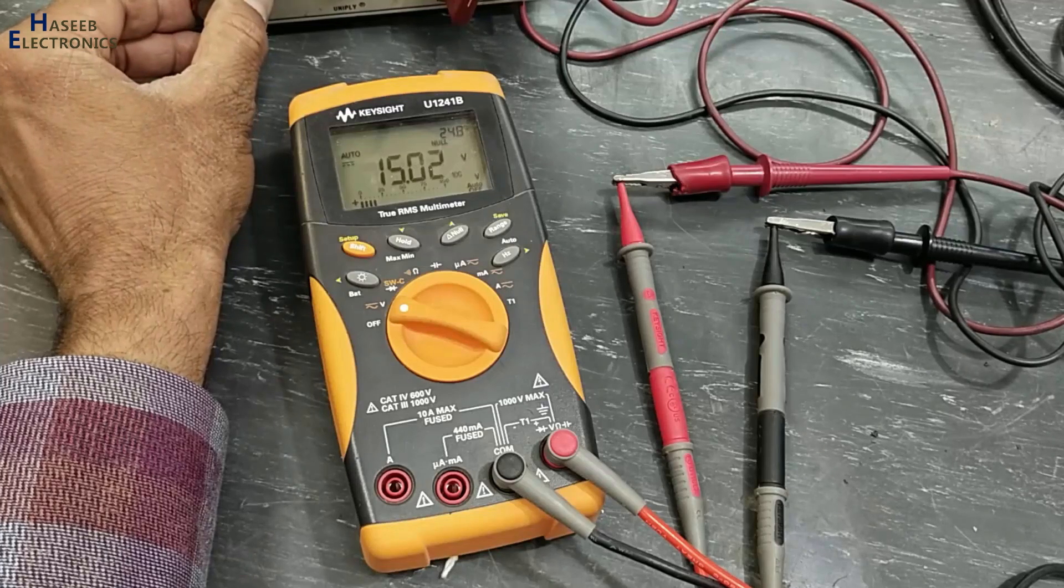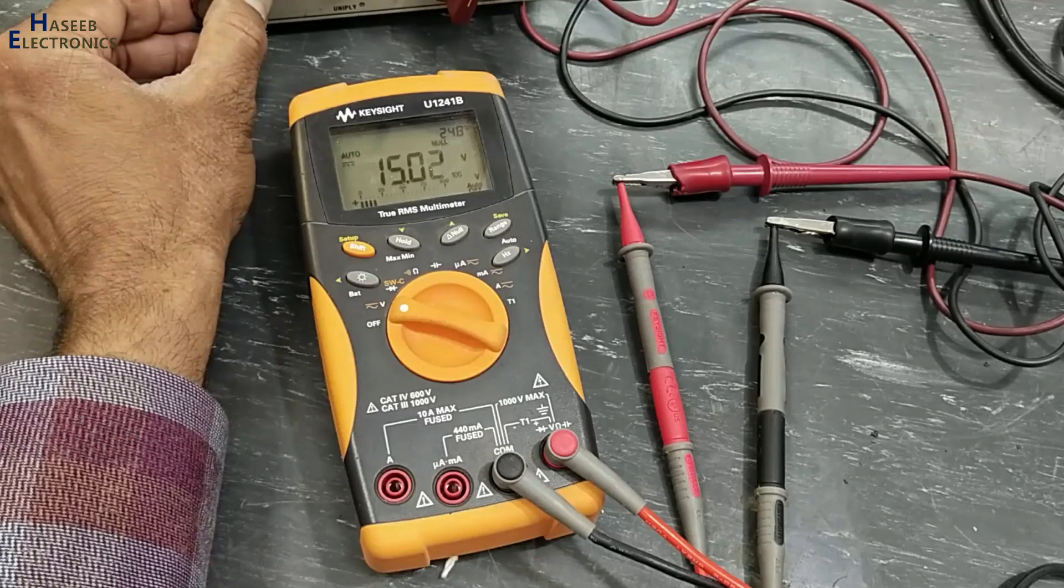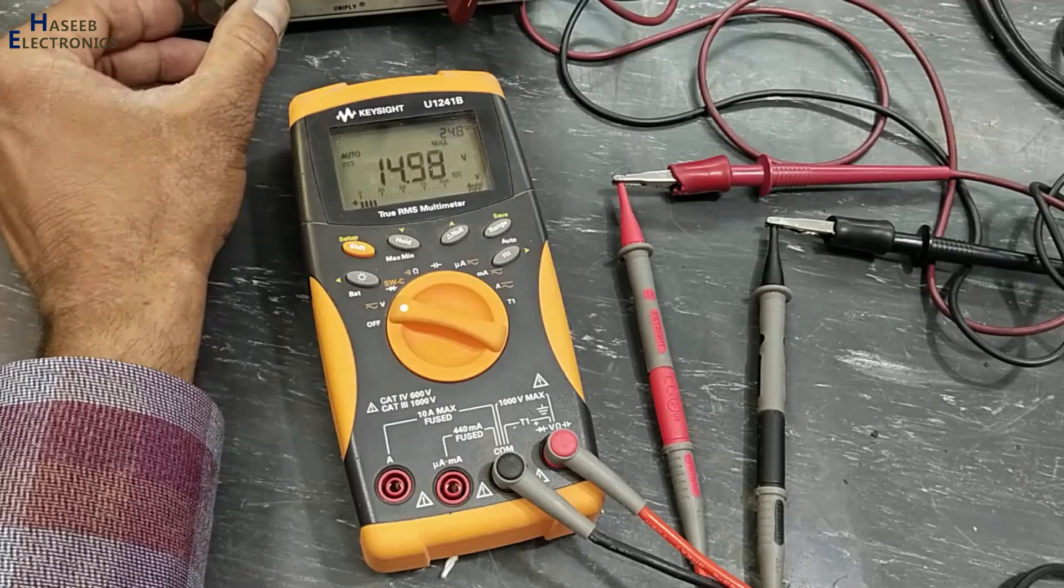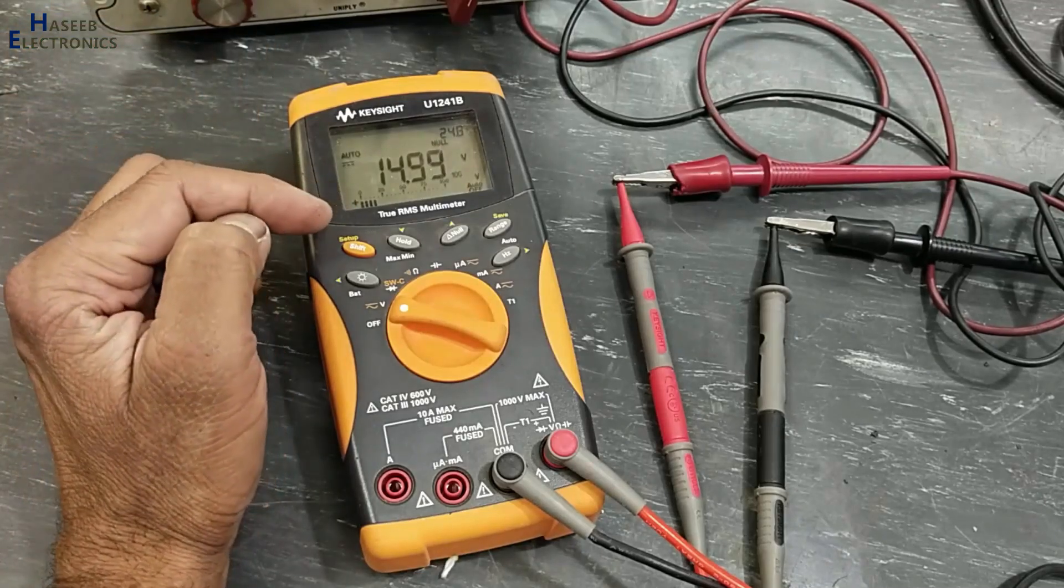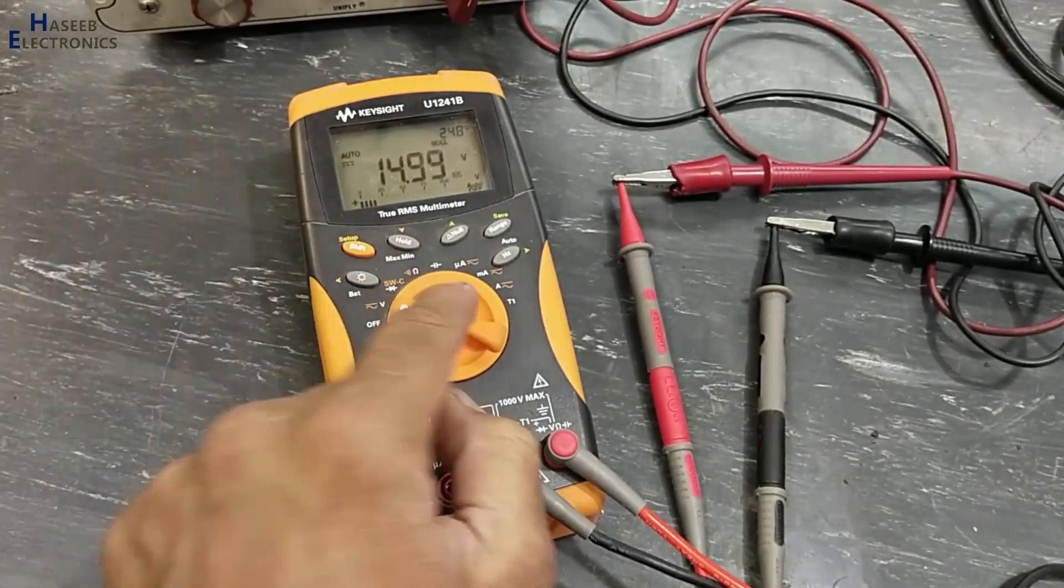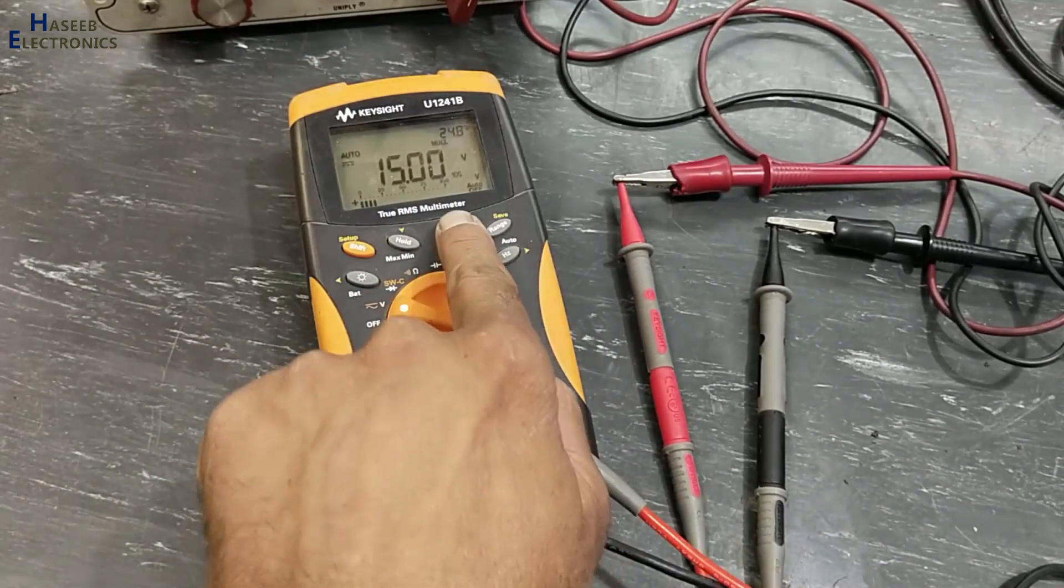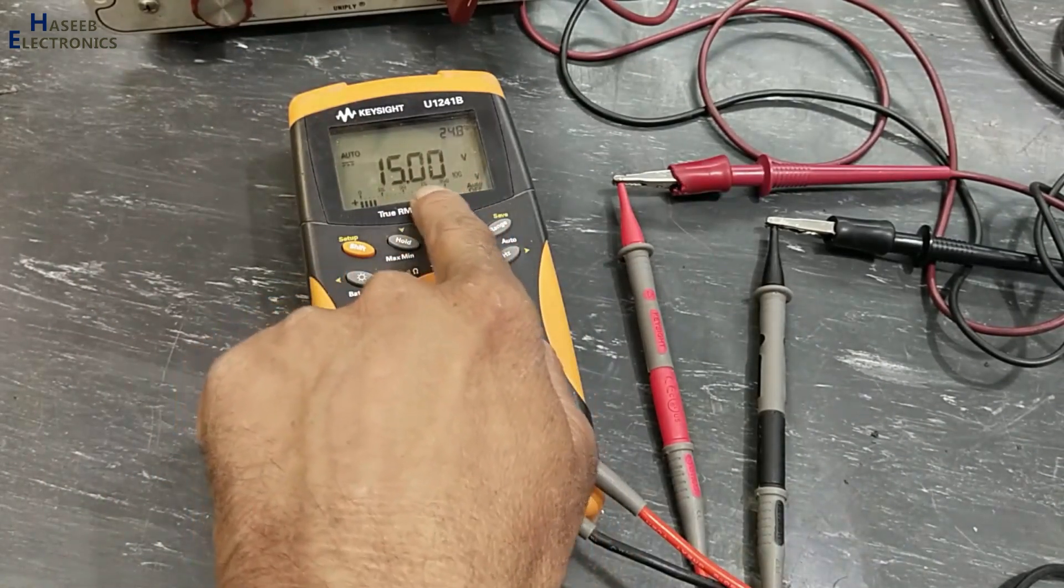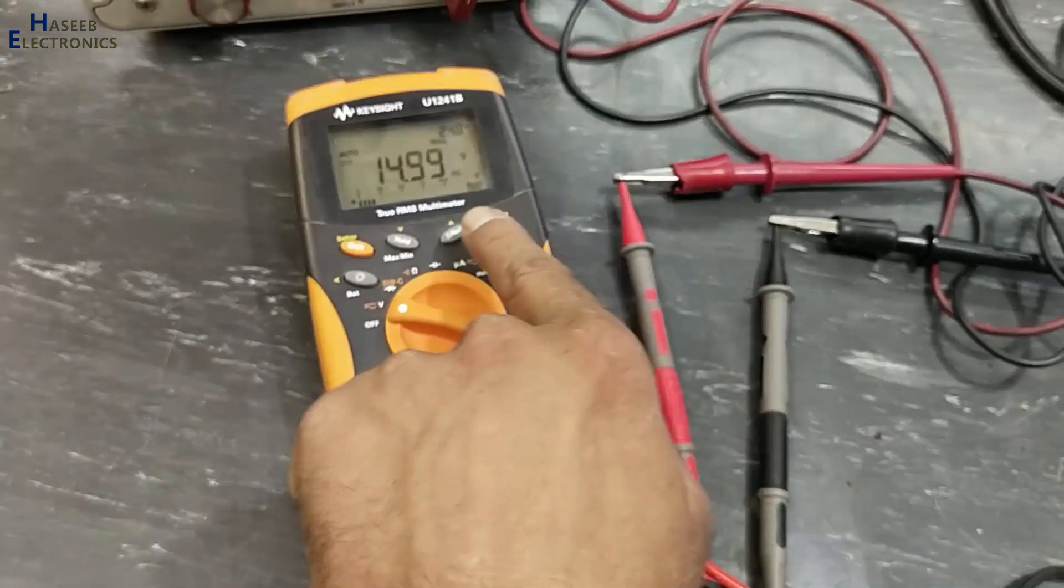This time it is showing plus 15 volt. That means the power supply is increased 15 volt from that value. The null point was 15 volt and 15 volt increase, total voltage 29.9, 30 volt.